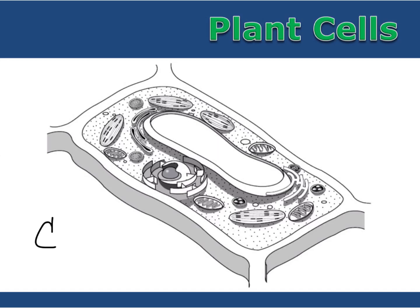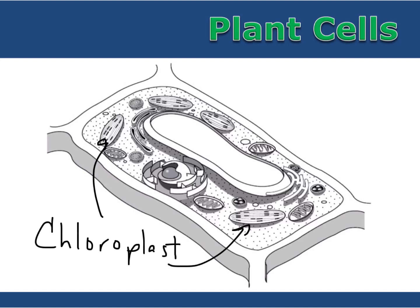And finally, plant cells have chloroplasts. Chloroplasts are organelles that allow plant cells to perform photosynthesis and make food for themselves.